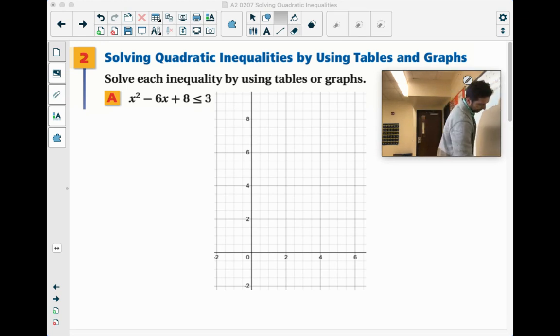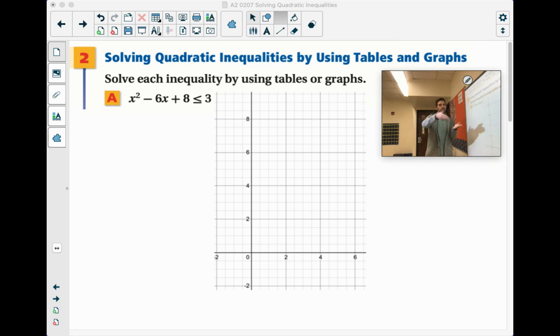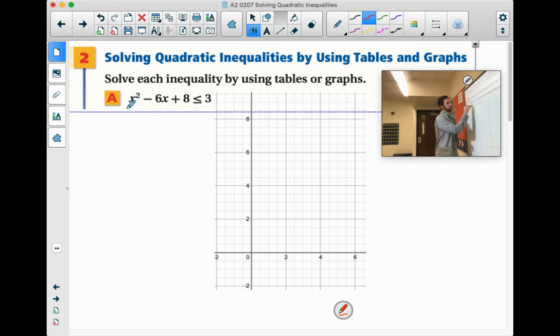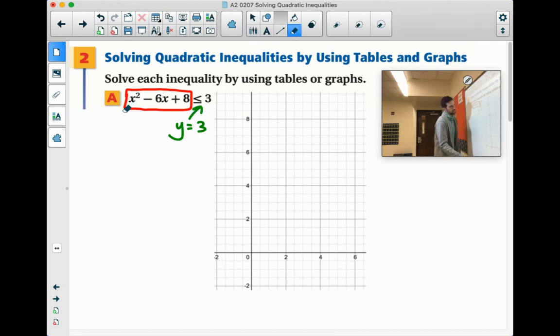Now is when it gets a little tougher. Before it was like y is less than or equal to something. Now we don't even have a y figured out here. So we're actually going to graph two different lines. We're going to graph this left parabola over here, and we're also going to graph y equals three for this part. So we'll do that second because that's a nice easy part.